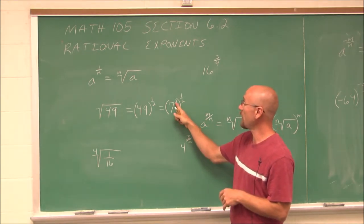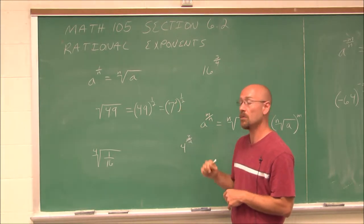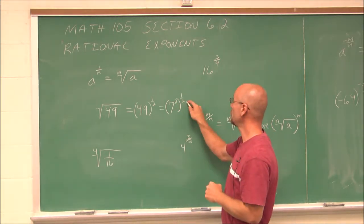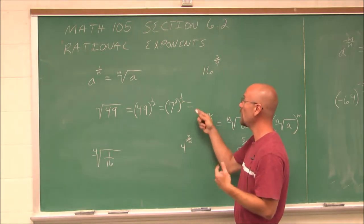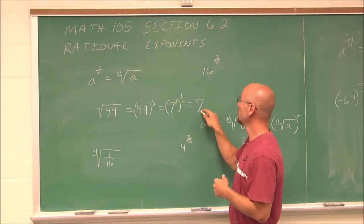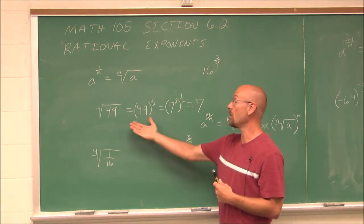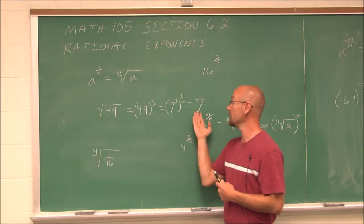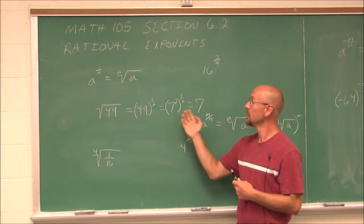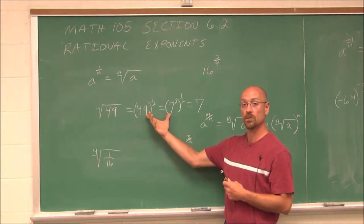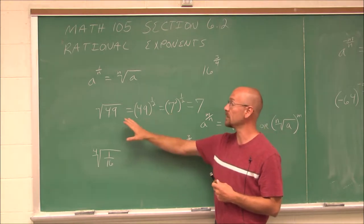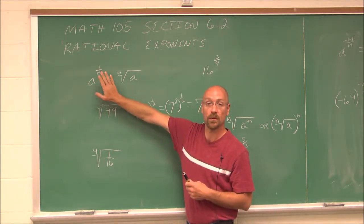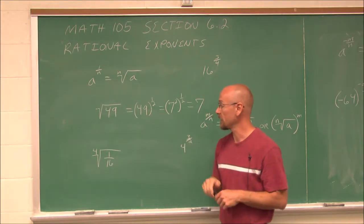If we know our rules of exponents, I can use the power rule here. If I have a power raised to a power, I can multiply it. 2 times 1/2 is just 1. So the answer is 7. And we already know that the square root of 49 is 7. So we can see how our rules of exponents apply, because radicals are nothing more than a rational exponent — a fractional exponent.